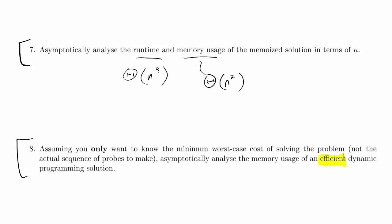It is kind of interesting that it's saying if you just want the minimum worst case cost. What you probably actually want is the series of probes to make, right? You want to know what to probe first. And just like with every memoization and dynamic programming problem we've done up to this point, if you want to get the actual solution out, you can basically look back through the table and retrace your steps.